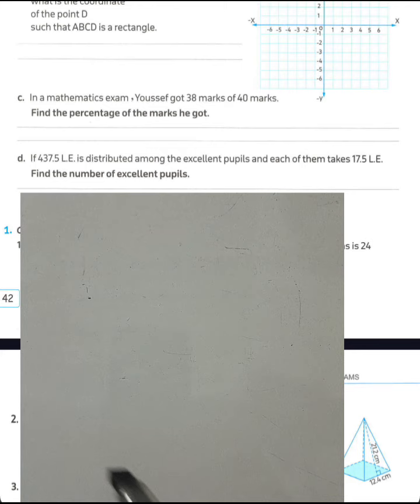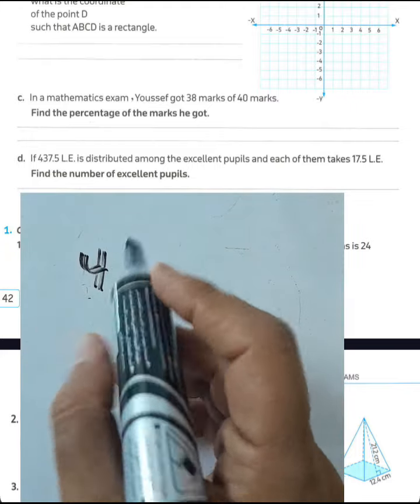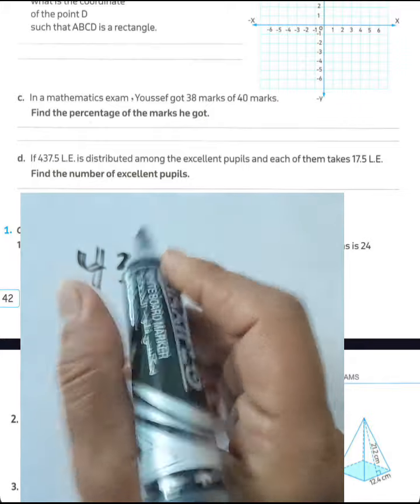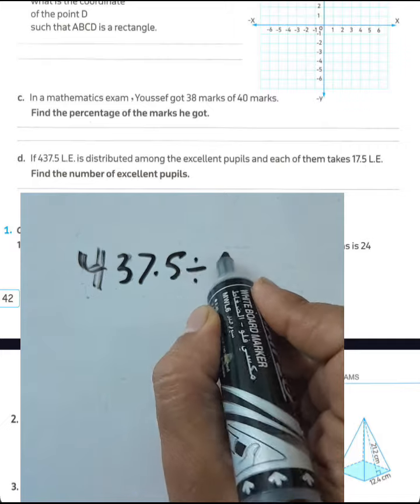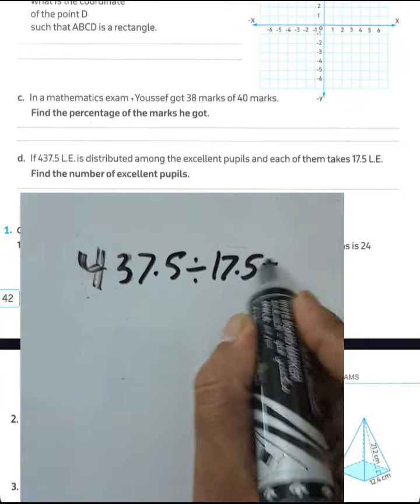We need to find the number of excellent pupils. We can write what we have: 17 and a half L.E., and the total we can write divided. The total money was 437 and a half divided by 17.5. You can cancel the point because the divisor